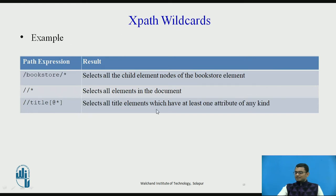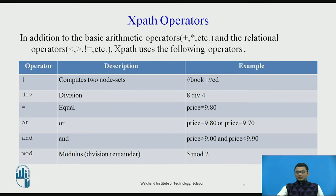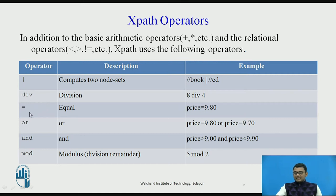These are the examples used with wildcards. In addition to the basic arithmetic and relational operators used in programming languages, XPath uses the following operators: div for division, a single equal sign for equals, 'or' for the OR operation, 'and' for the AND operation, and 'mod' for the modulus operation. A pipe symbol is also used to compute two or more node sets.